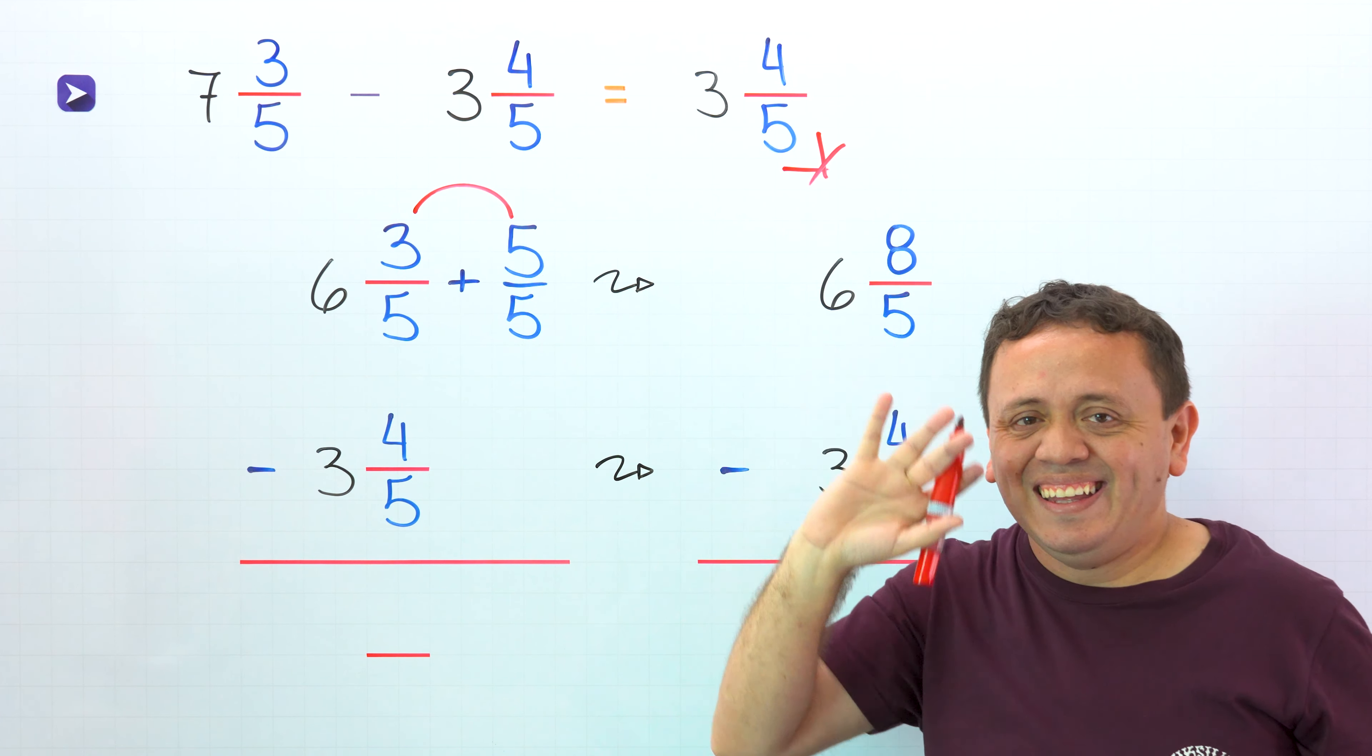The problem is that the fractional part of the second mixed number is greater than the fractional part of the first mixed number. In this case, we need to regroup. Pay attention! We're going to regroup. Let me raise this number. Now we're going to rewrite 7 as 6 plus 1.